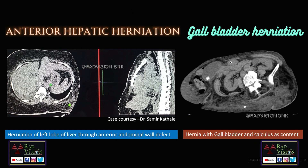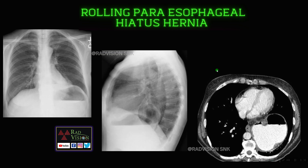Next, here you can see herniation of the left lobe of the liver into the anterior abdominal wall defect — this is anterior hepatic herniation. Thanks to Dr. Samir Kathale for contributing this case. Here also you can see there is an abdominal wall defect with herniation of the gallbladder with calculus into the subcutaneous tissues — this is called gallbladder herniation.